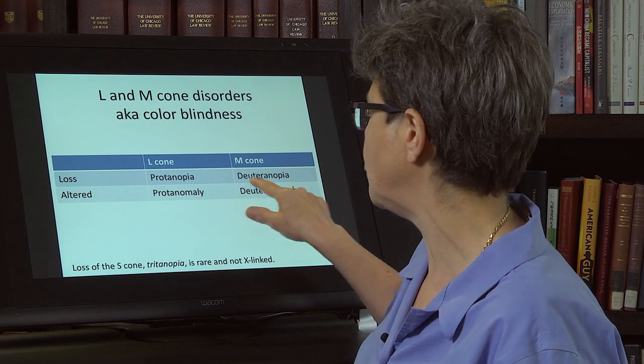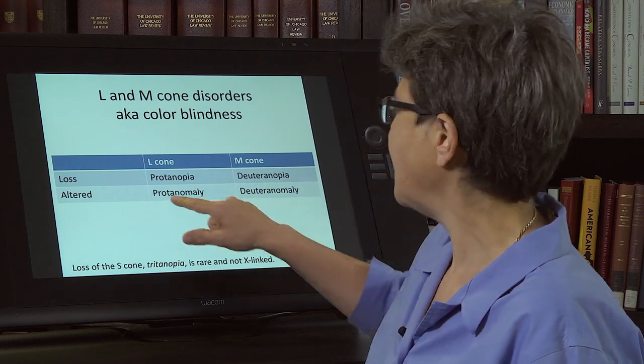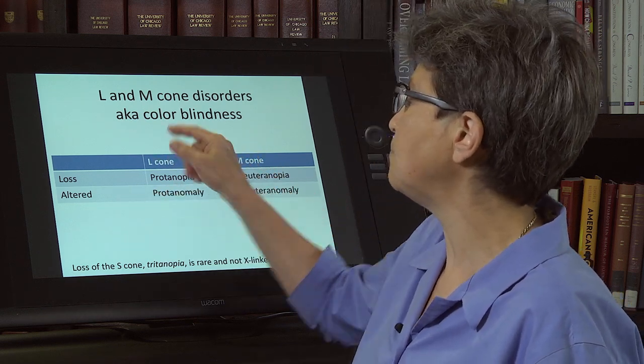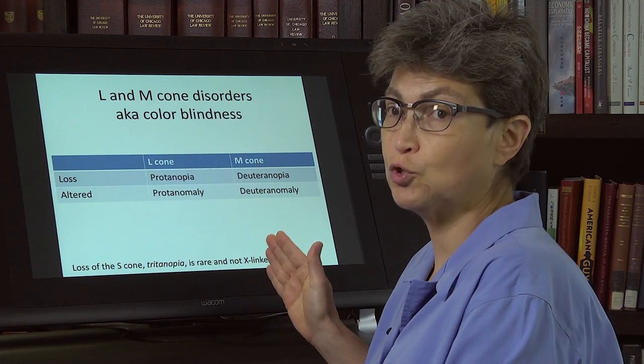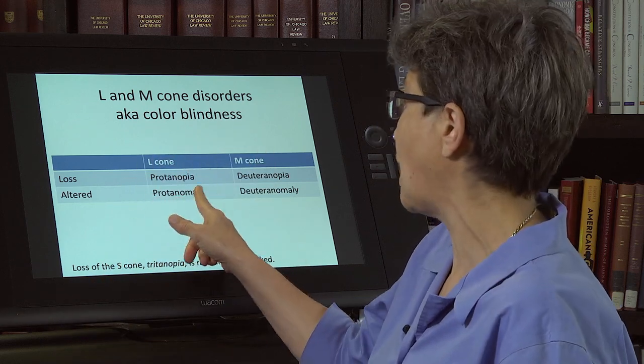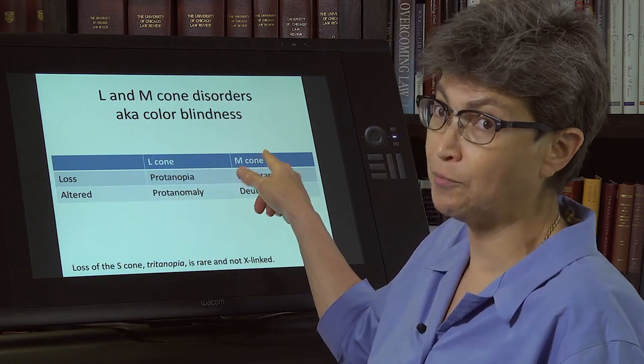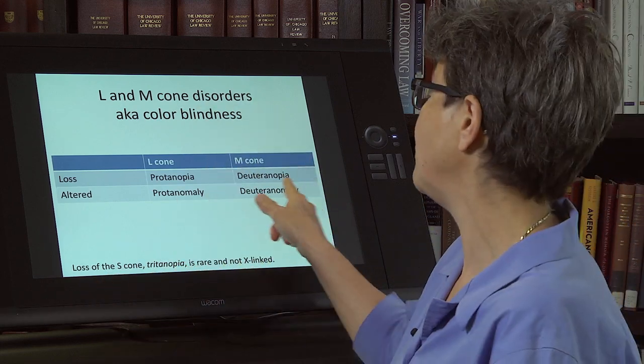And if you lose the M cone, you have a deuteranopia. But if you simply shift the L cone over towards the M cone, you have a protanomaly. And if you shift the M cone towards the L cone, you have a deuteranomaly.